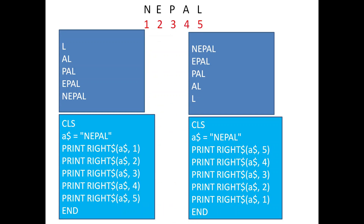Welcome to Make Easy. In this specific video I'm going to explain about pattern printing — this is the third video of pattern printing. You can follow my previous videos to understand it better. I'm going to explain two patterns: how to print them using the for loop in a step-by-step process. In my previous video I explained how to use the Left$ function; now in this video I'm going to use the Right$ function. In the next video I'll explain when to use Mid$.